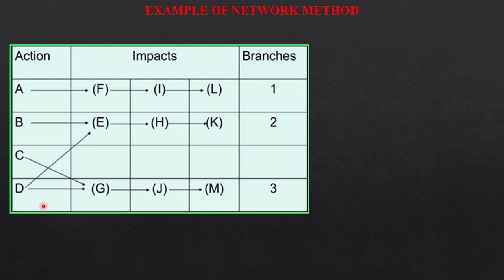This is a matrix where four actions are there which result in primary impact, secondary impact and tertiary impact. This is one branch and this is the second branch. But we do not take this as the third branch. There are actually five branches, but we have to calculate carefully. This is the first branch, this is the second branch and this is the third branch.